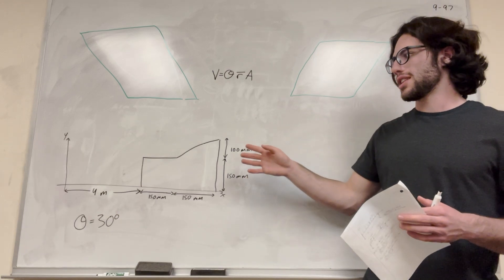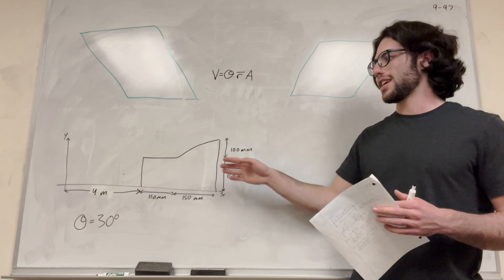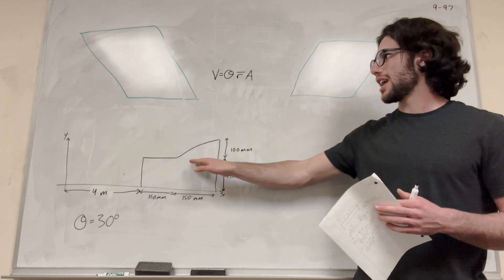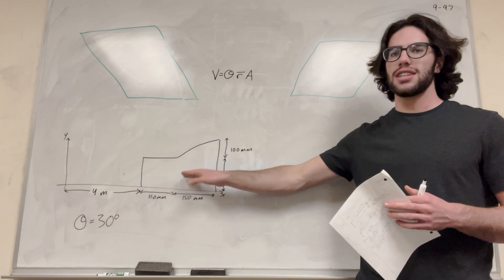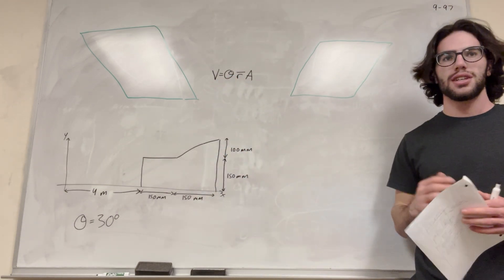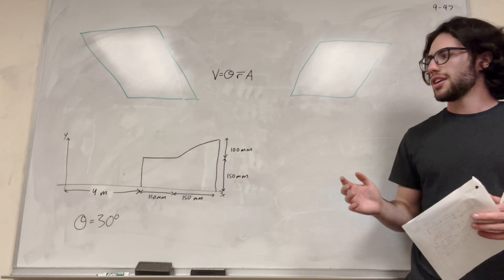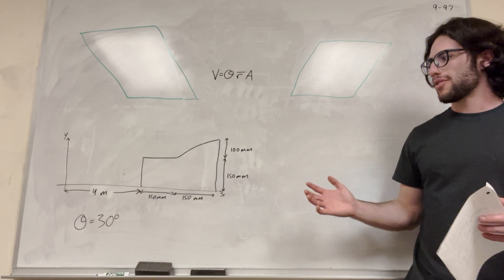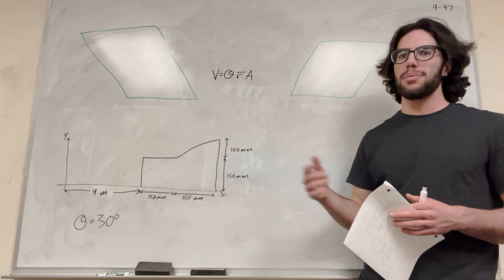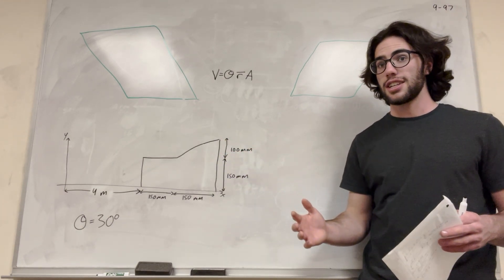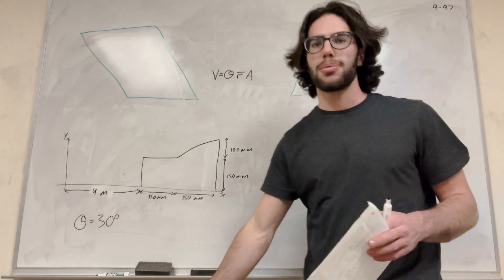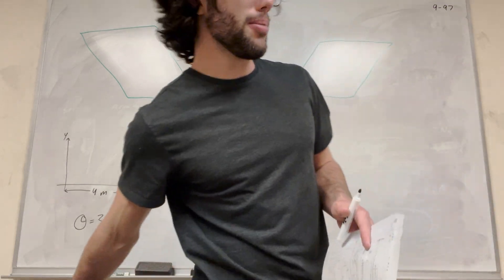What we need to do is find the area of this shape and the center of mass, and then multiply it by theta to find the volume. When we have a complex shape like this, we want to simplify it by breaking it into simpler shapes.